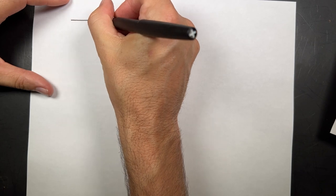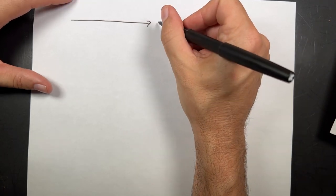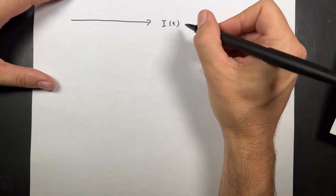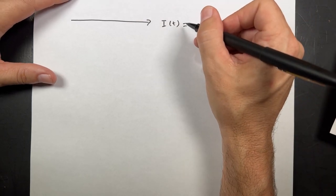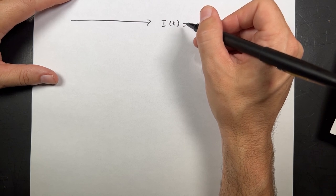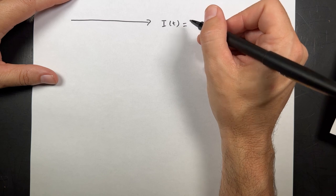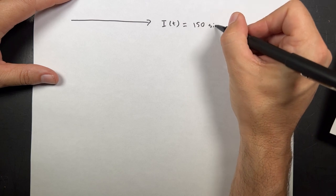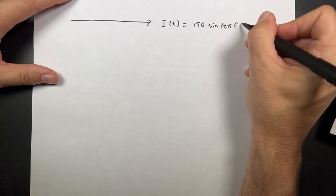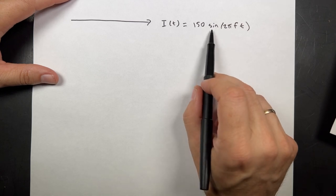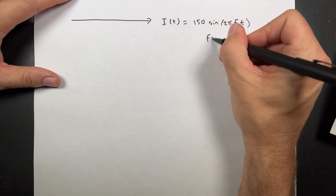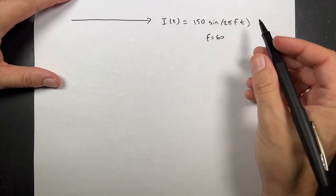So, here's my high voltage power line. And I'm going to put this as I, as a function of time. Right, because this is going to be, and let's write this as, it says, it carries a maximum current of 150 amps. So, I can write this as 150 times sine of 2 pi f t.